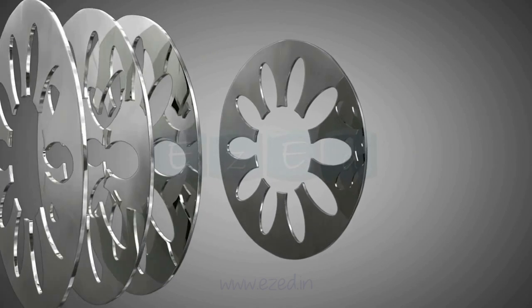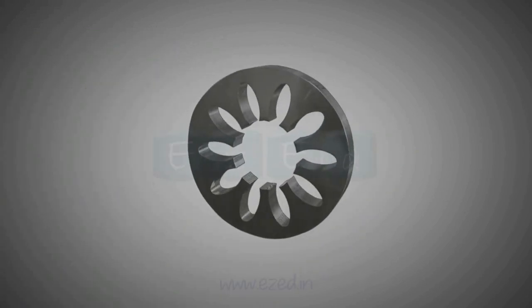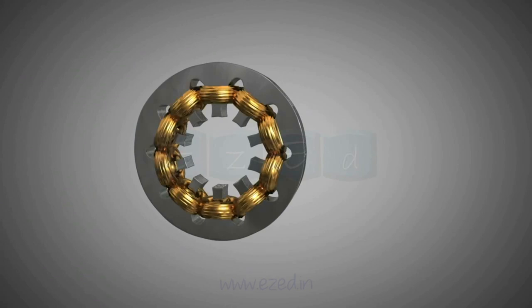A stator is an outer cylindrical hollow structure made up of multiple laminated steel sheets joined together. Many slots are provided on the inner peripheral of the stator, in which the copper coil is wound to generate the magnetic poles.